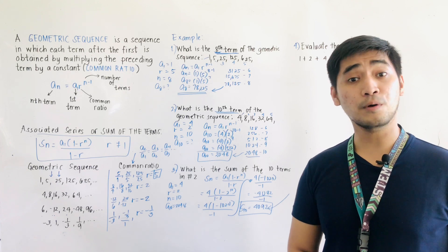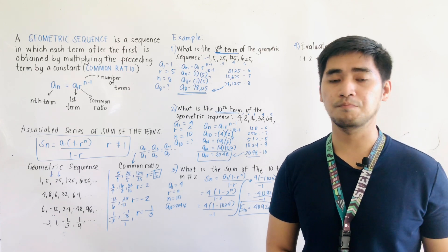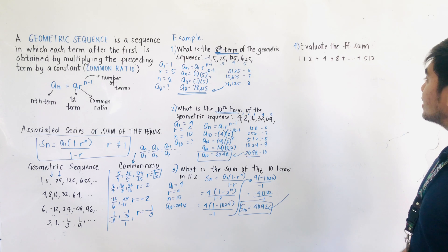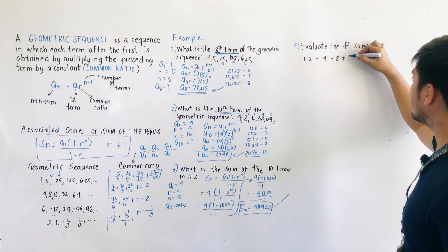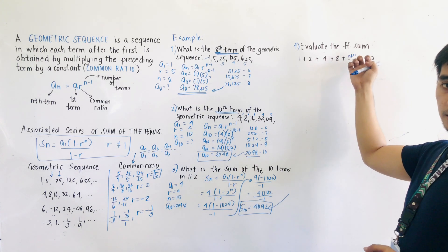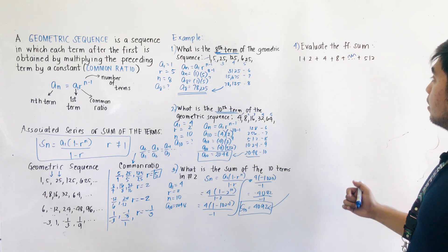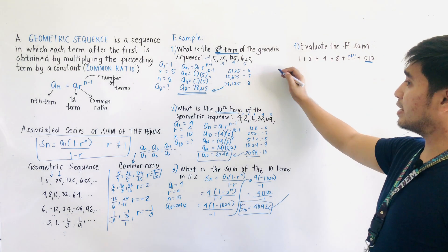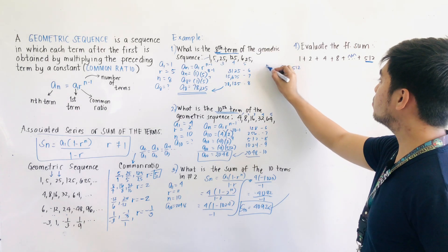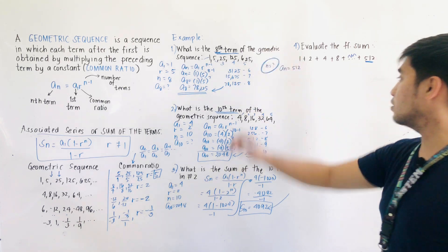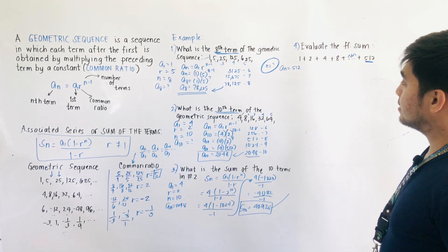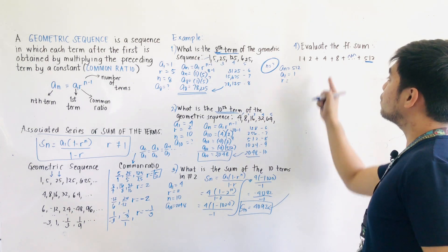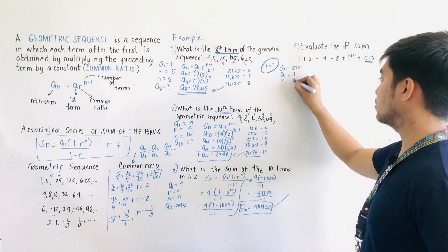Now for a critical thinking question: Evaluate the sum 1 plus 2 plus 4 plus 8 plus up to 512. We do not know all the terms in between, but we know the last term is 512, so AN equals 512. We can identify A1 equals 1 and R equals 2 divided by 1, equals 2.